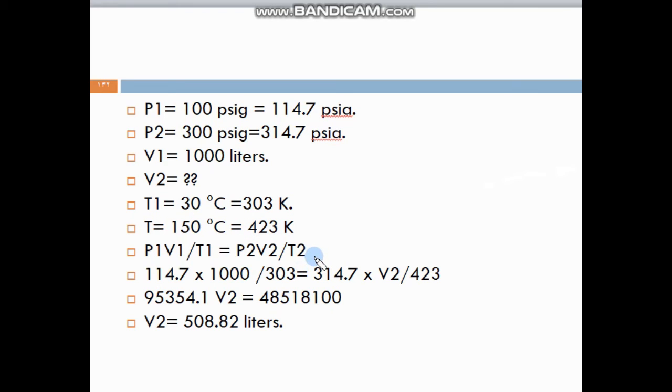Here we will write our formula. P1 multiply V1 divided by T1 equals P2 multiply V2 divided by T2. After we write the numbers, we make our multiplications and we find that V2 is equal to 508.82 liters.